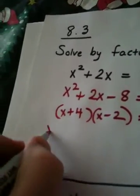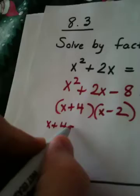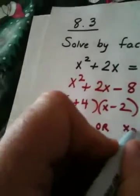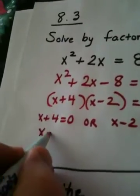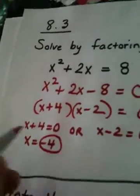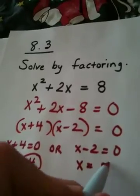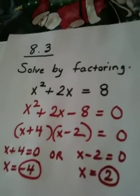Set each factor to 0. x plus 4 is 0 or x minus 2 is 0. Here I have x as negative 4 and here I have x as a positive 2. And we're done.